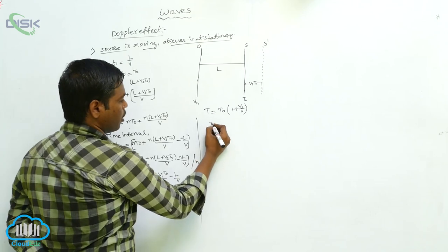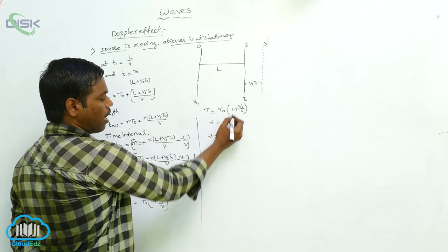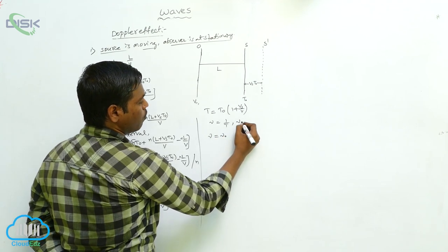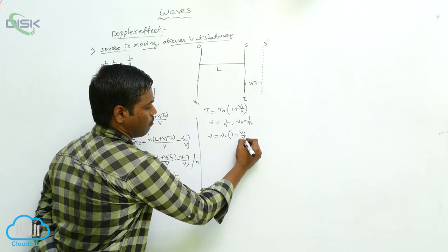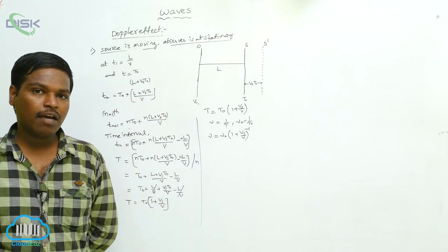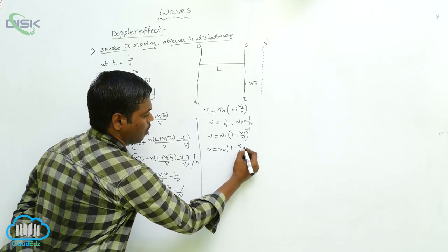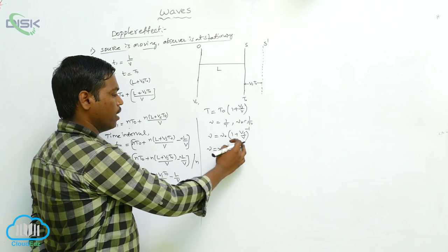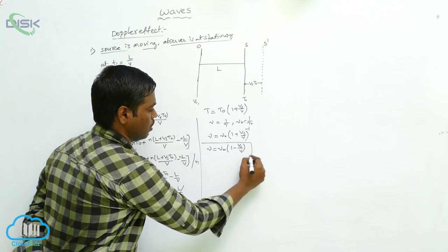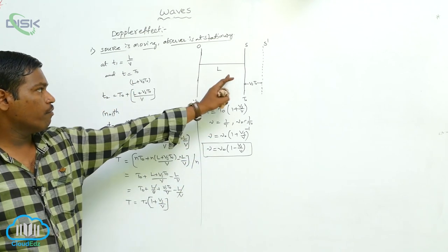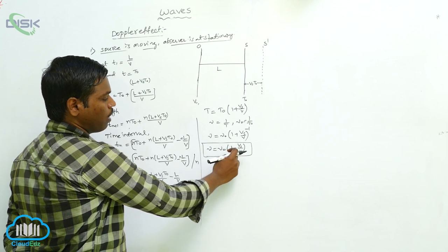The frequency ν equals 1 divided by T. Taking the reciprocal, ν equals ν0 times (1 plus Vs by V) to the power of minus one, where ν0 equals 1 by T0. By binomial expansion, keeping only the first term, ν equals ν0 into (1 minus Vs by V). This is the frequency of the wave when the source is moving with speed Vs away from the observer.